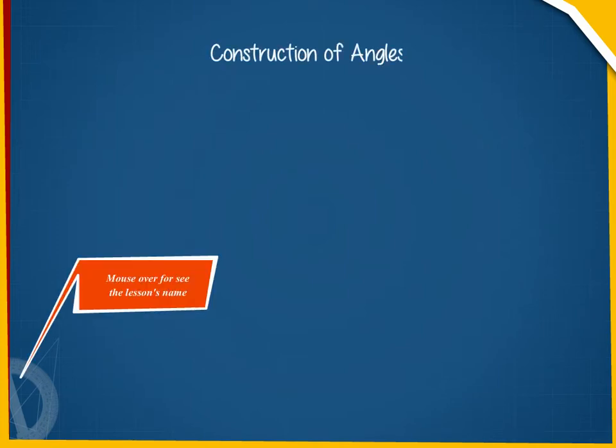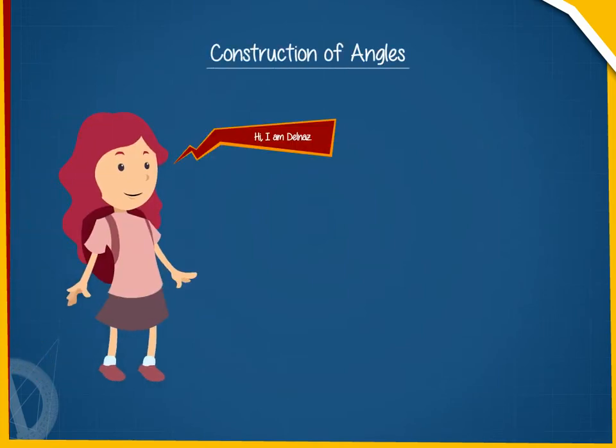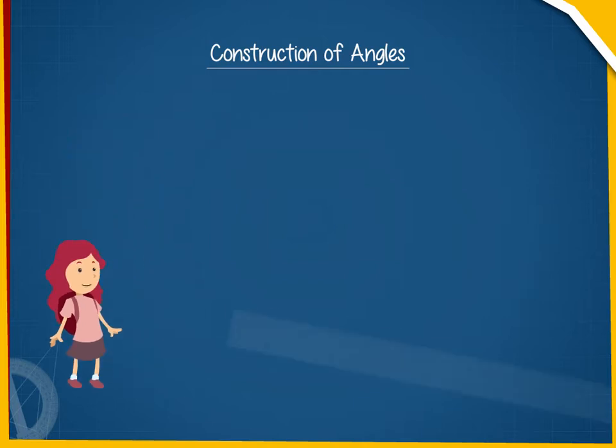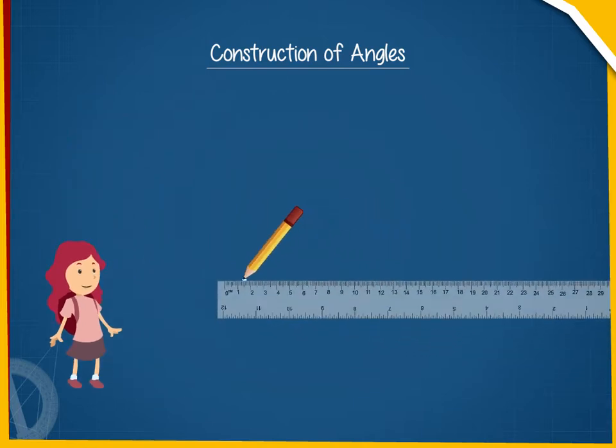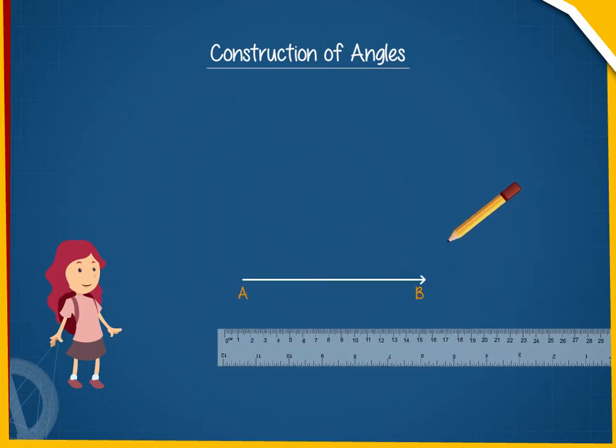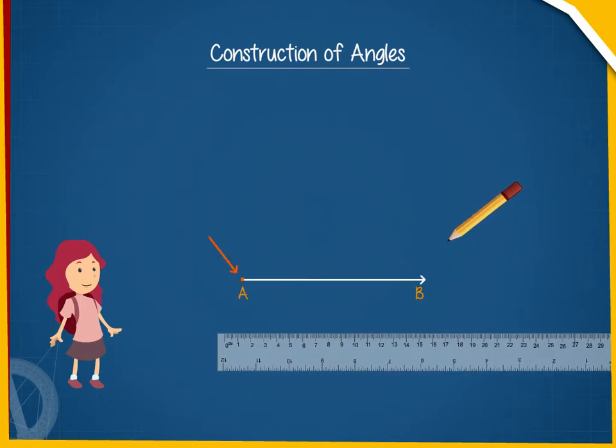Construction of Angles. Delnaz wants to construct an angle of 80 degrees using a ruler and protractor. First, she draws a ray AB with A as its endpoint or initial point.